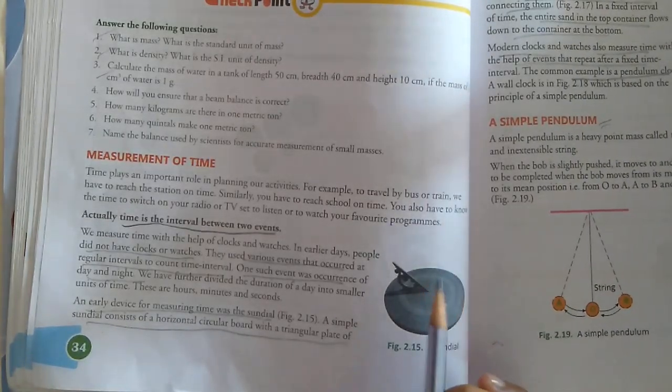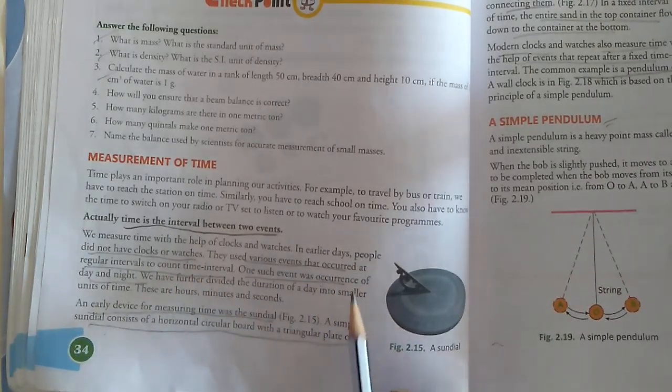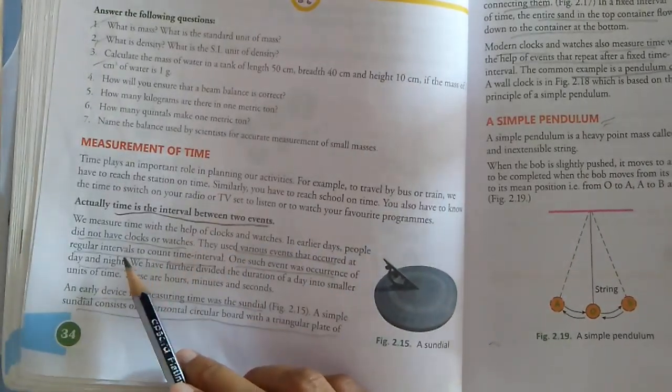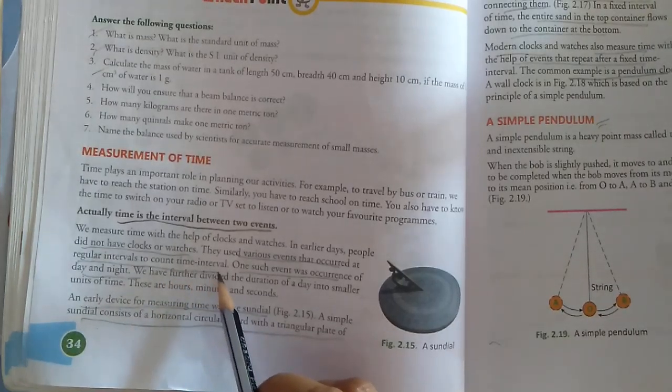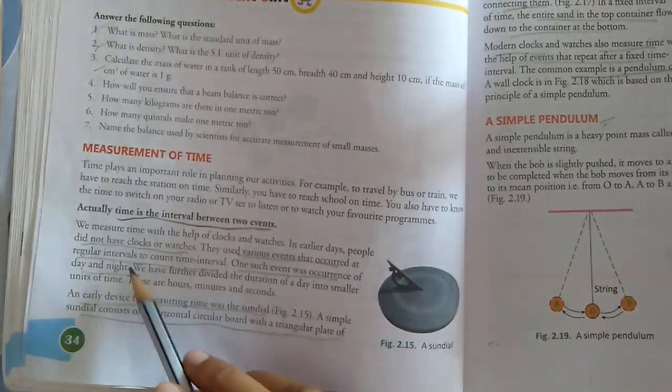We measure time with the help of clocks and watches nowadays. But in earlier days, people did not have clocks or watches. They used various events that occur at regular intervals to count time intervals. One such event was occurrence of day and night.